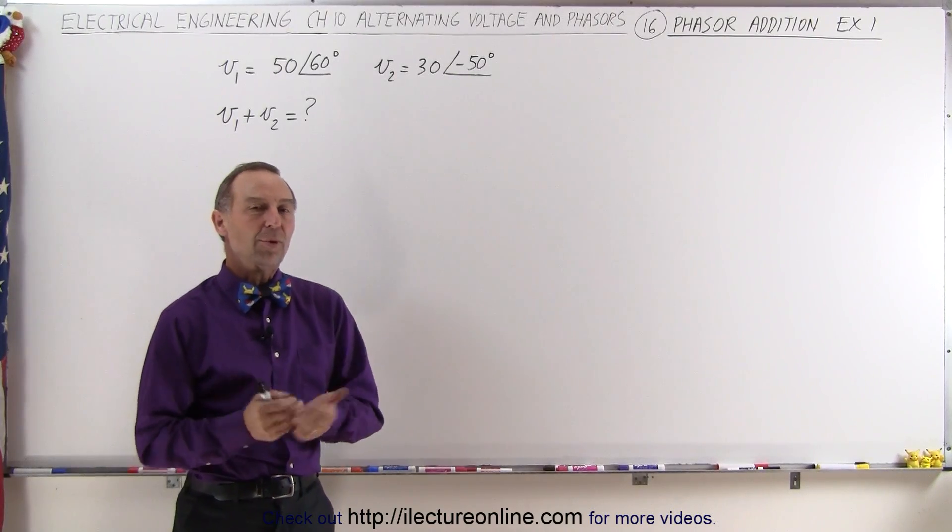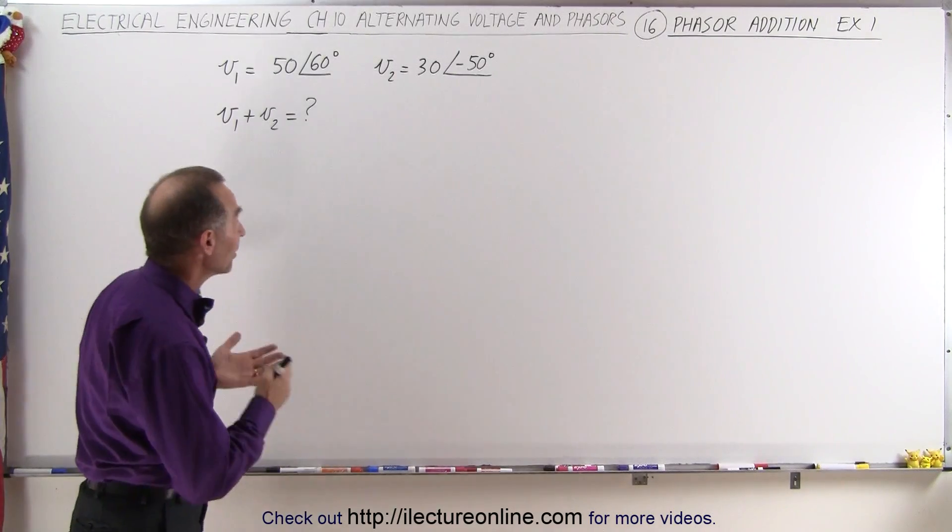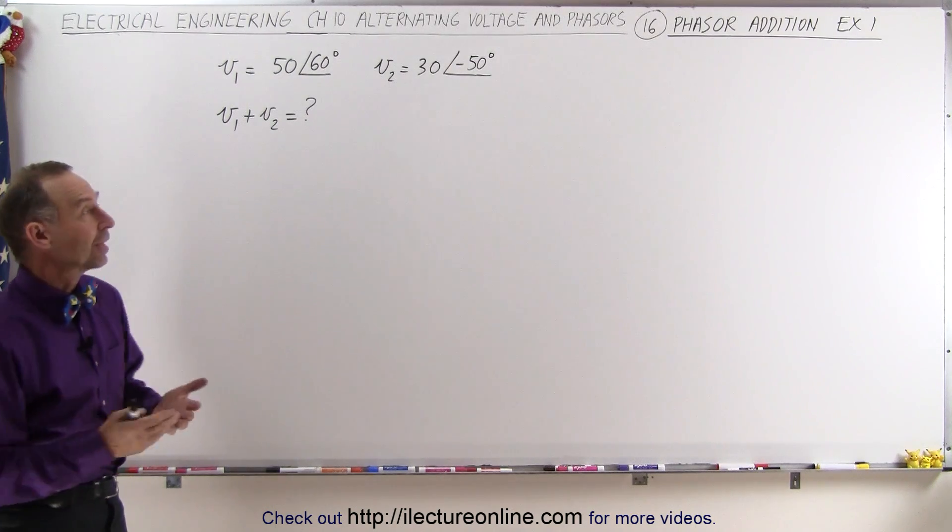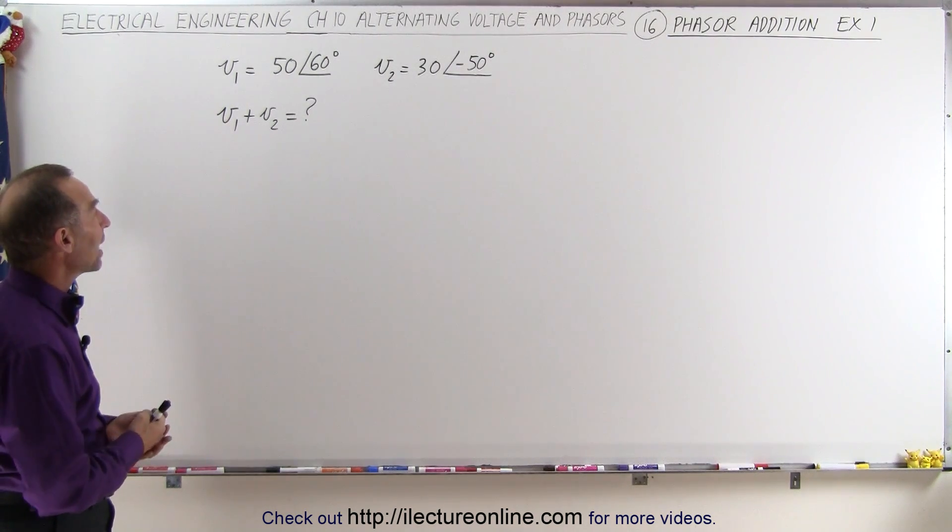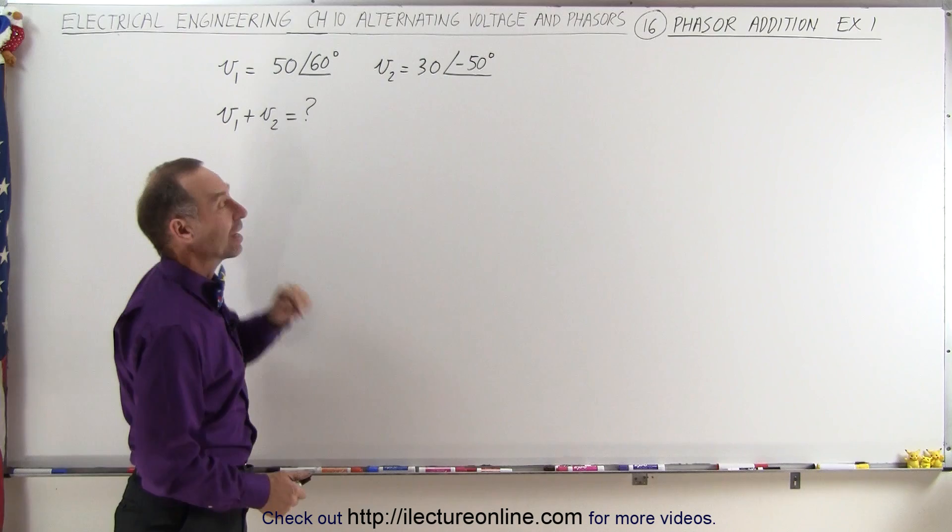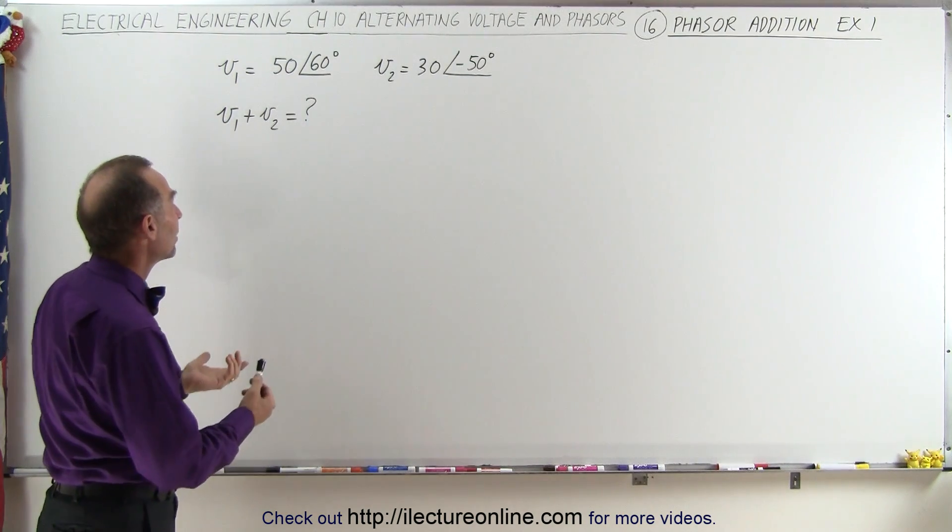Welcome to our lecture online. Suppose we have two voltages, V1 and V2, represented in phasor format with magnitude and phase angle, and we're supposed to add them together. How do we do that?